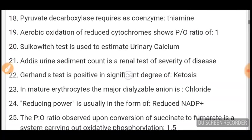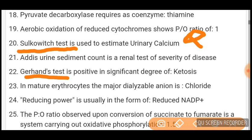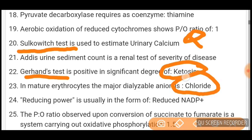Sulkowitch test is used to estimate urinary calcium. Addis urine sediment count is a renal test for assessing severity of disease. Gerhardt's test is positive in a significant degree of ketosis — another test for ketone bodies. In mature erythrocytes, the major dialyzable anion is chloride.